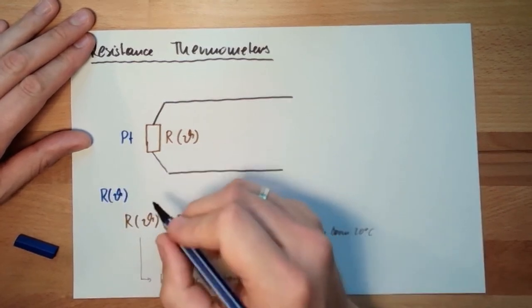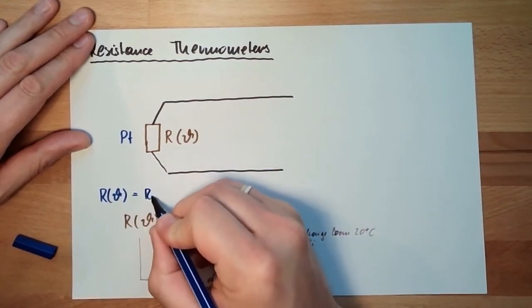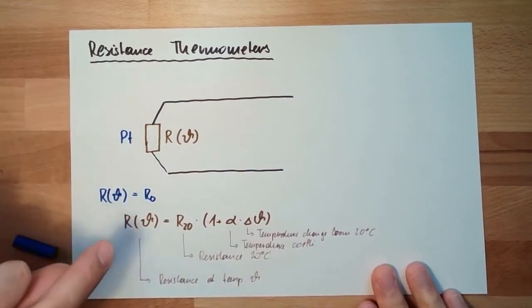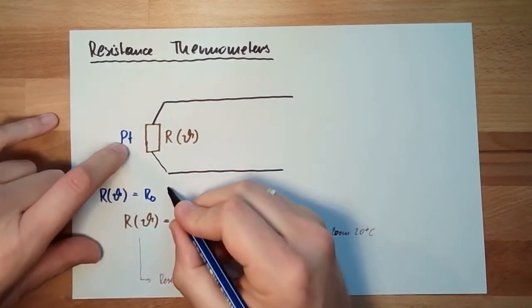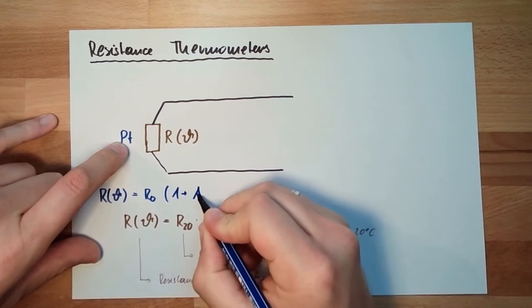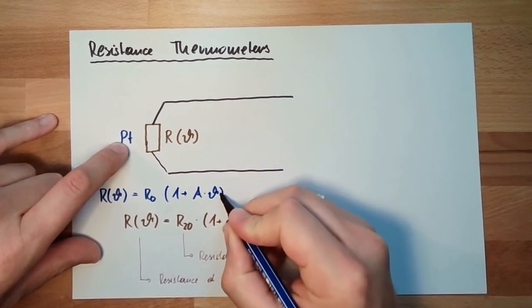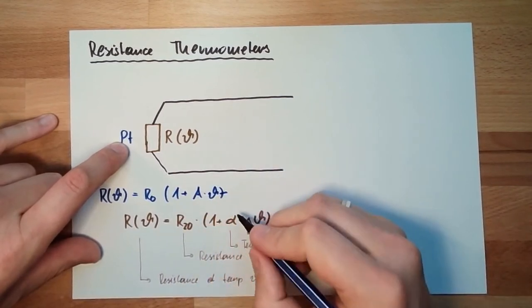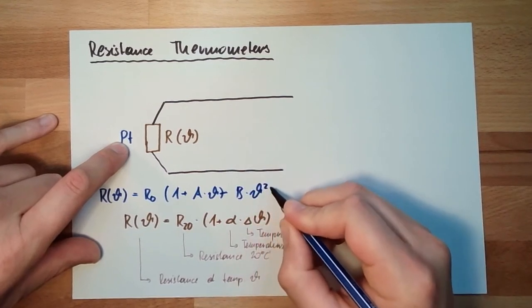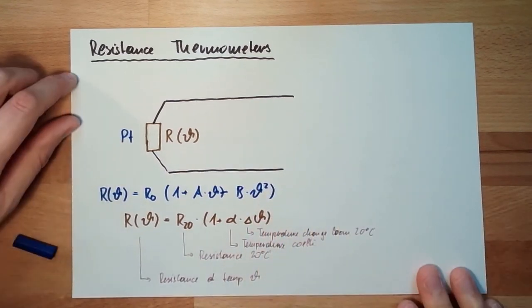R of theta is R zero, that's the resistance at zero degree Celsius, and then 1 plus A multiplied by theta plus B multiplied by theta squared.